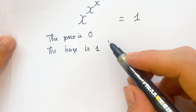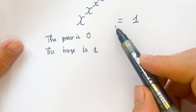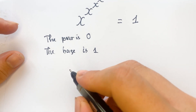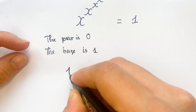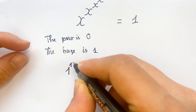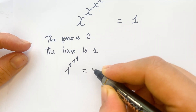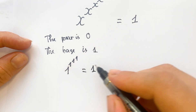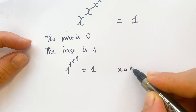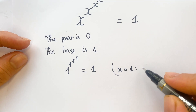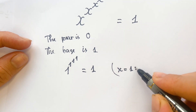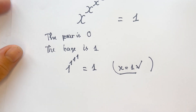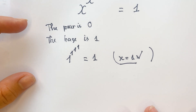This gives us two immediate possibilities: x = 0 and x = 1. We can see that 1 power 1 power 1 equals 1, so x = 1 is a valid solution.